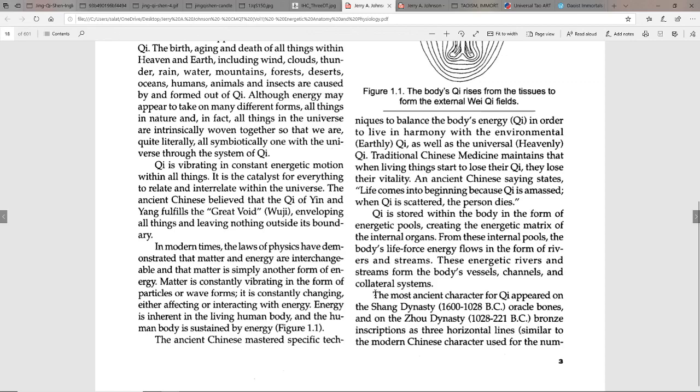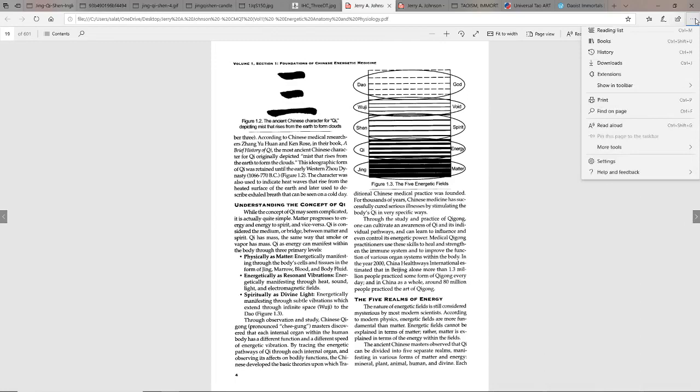So chi is stored in the body in the form of energetic pools creating the energetic matrix of the internal organs. From those internal pools the body's life force energy flows in the form of rivers and streams. These energetic rivers and streams form the body's vessels, channels, and collateral systems.